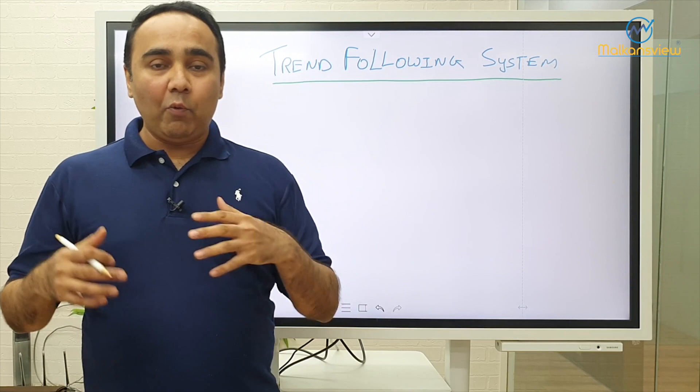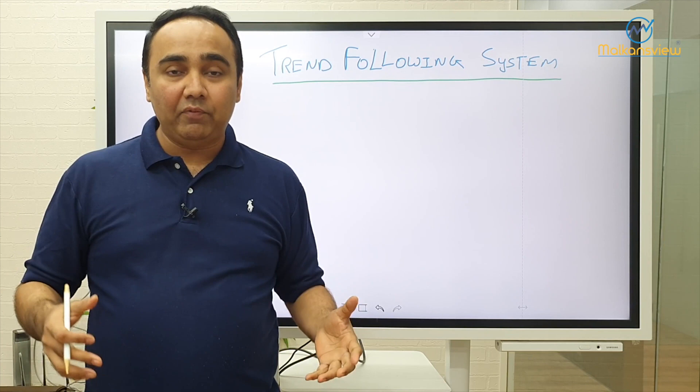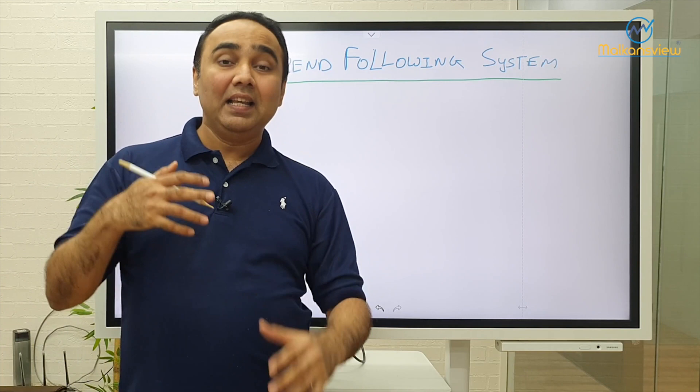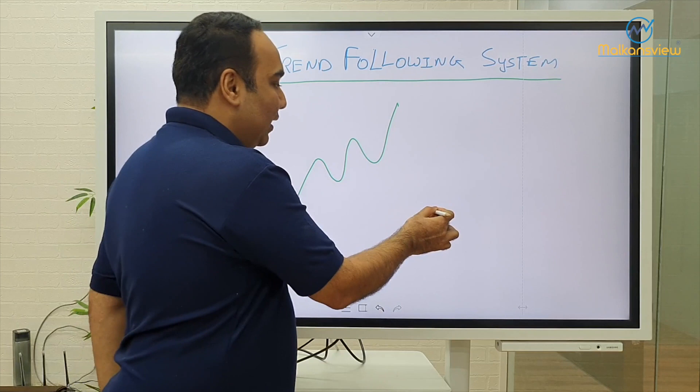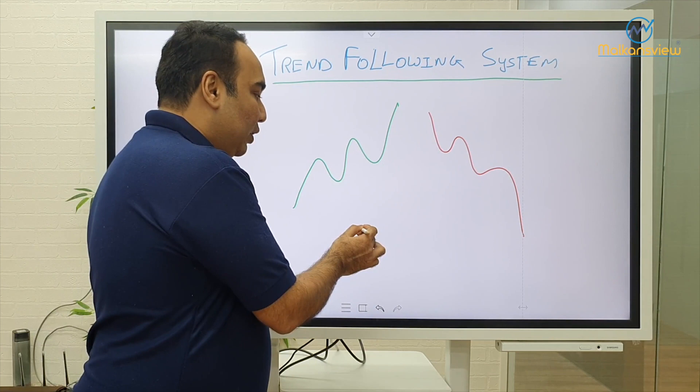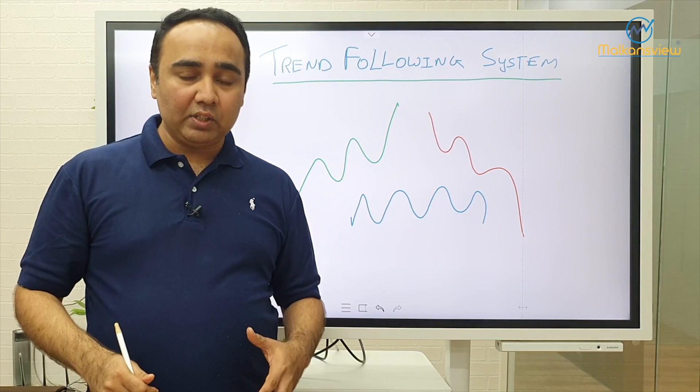So what is this trend following system? Basically we need to understand there are three types of trends: one, there is an uptrend; second, there will be a downtrend; and third would be your sideways trend. A particular stock will have an uptrend, downtrend and sideways trend throughout the year. If we keep trading the same stock again and again throughout the year, we will be able to capture all three moves.